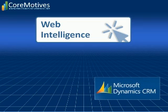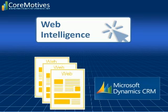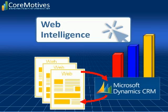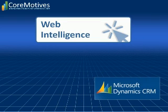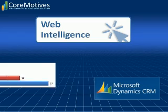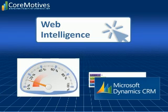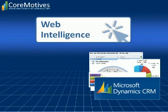CoreMotives Web Intelligence is powerful marketing automation software that detects and links website visitors with CRM contacts and leads, enabling you to turn web visits into revenue opportunities. Integrating your website with Dynamics CRM enables you to track, measure, analyze and act upon all of your website activity directly in CRM.